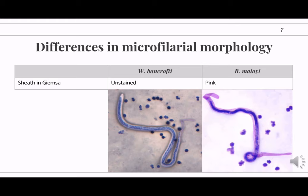The microfilariae of both Wuchereria and Brugia are sheathed, but for Wuchereria the hyaline sheath is unstained or only lightly staining even with Giemsa or H&E. The hyaline sheath of Brugia, on the other hand, will be seen as pink or purple. For Wuchereria, you're also able to appreciate the nuclei along the body of the worm as individual circles. But the nuclei along the body of Brugia are overlapping, inconspicuous, and indistinct — when you look at the microfilariae of Brugia, all you will see is a continuous blurry purple, pink, or blue staining mass along the body.